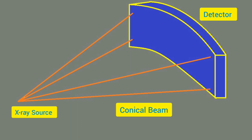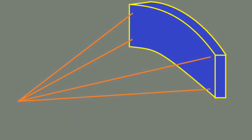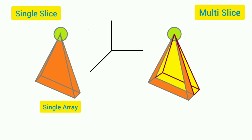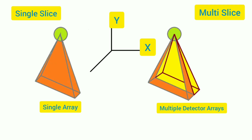The slice thickness and the number of slices present in a CT scan is determined by the number of arrays of the detector. Looking at the Z plane, we have single slice on the left and multi-slice on the right. The yellow and orange portions indicate the data acquired with the help of different arrays of detectors.